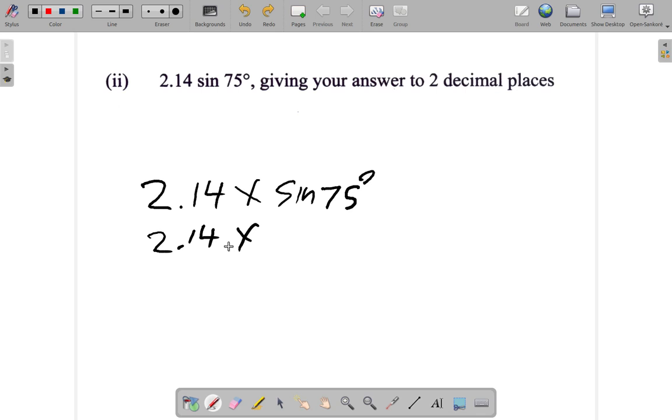If when you use a calculator to find the sin of 75 degrees, you get 0.9... Now, first they want two decimal places.